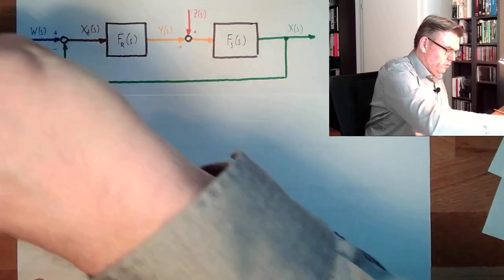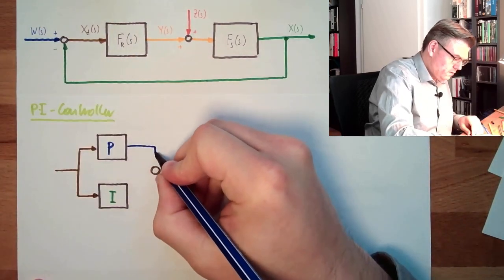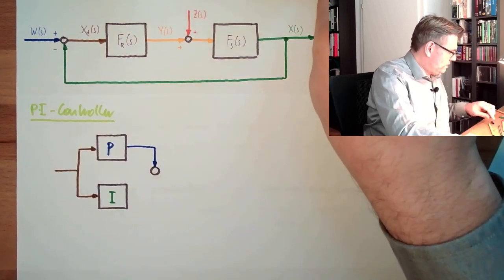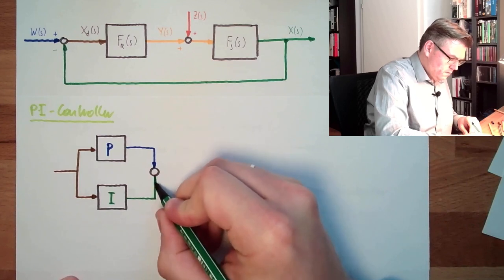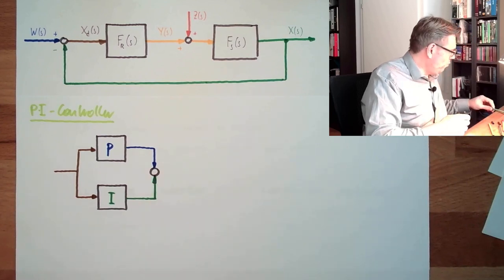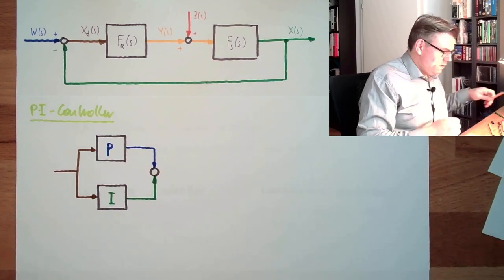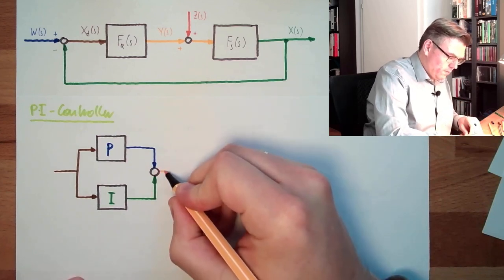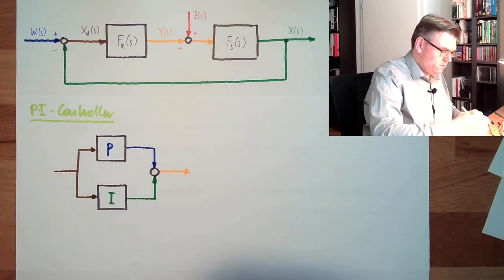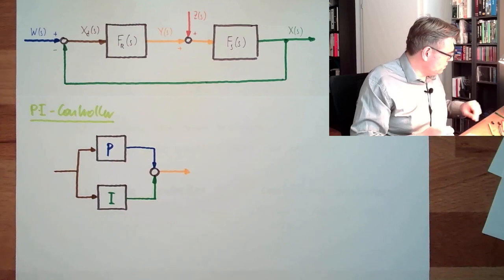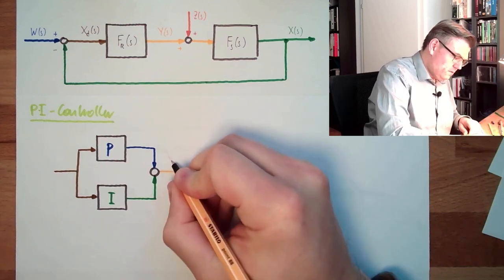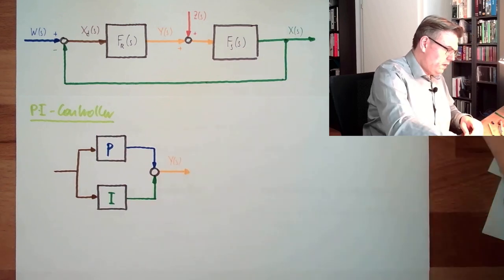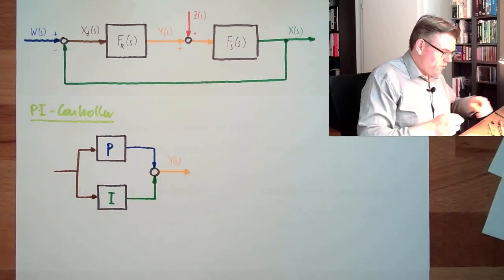There is the output of the P-element. There is the output of the I-element. And then we are building the correcting variable. This is how this looks like. So here we have y from s, and here we have xd from s.